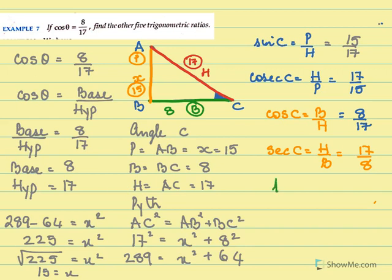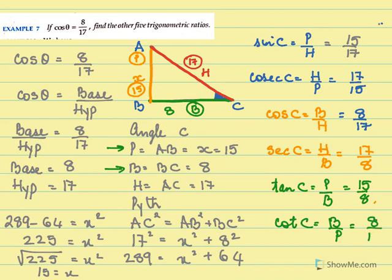Now the reciprocal of cos is sec. So sec C will be hypotenuse over base, that is 17 over 8. Next I need to find tan C. Tan C is perpendicular over base. So here is the perpendicular and this is the base, so it will be 15 over 8. And the reciprocal of tan C is cot C, so cot C is base over perpendicular, that is 8 over 15.